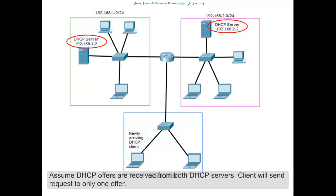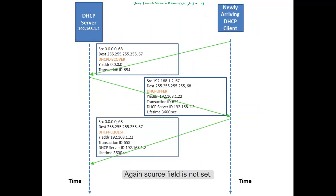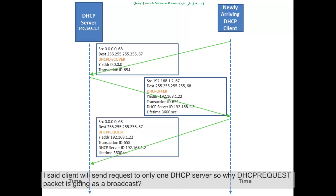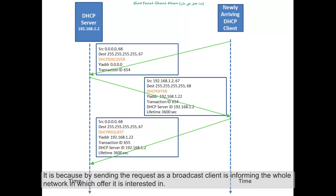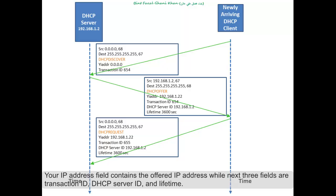Assume DHCP offers are received from both DHCP servers. The client will send a request to only one offer. Again, the source field is not set and the destination is a broadcast. But why? It is because by sending the request as a broadcast, the client is informing the whole network which offer it is interested in. The 'Your IP address' field contains the offered IP address, while the next three fields are transaction ID, DHCP server ID, and lifetime.